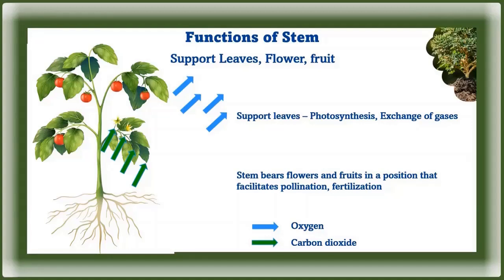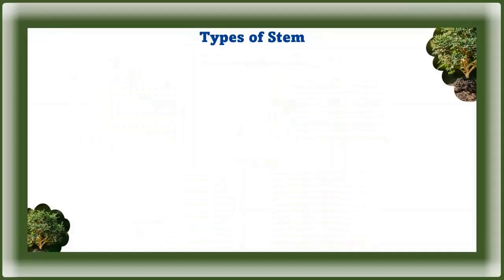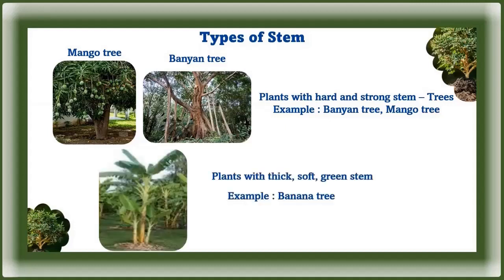Storage: some stems undergo modification to store food and water. Examples include sugarcane, ginger, potato, and turmeric. Some green stems contain chloroplasts and are capable of carrying out photosynthesis. Some stems are soft and some are hard — trees such as banyan and mango have hard and strong stems, called trunks. Plants producing woody stems are called trees and shrubs.